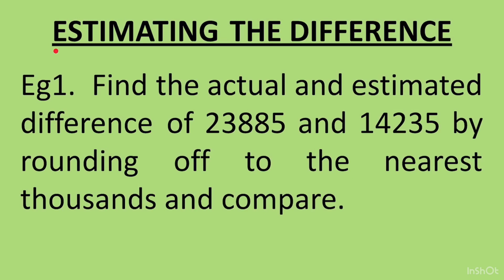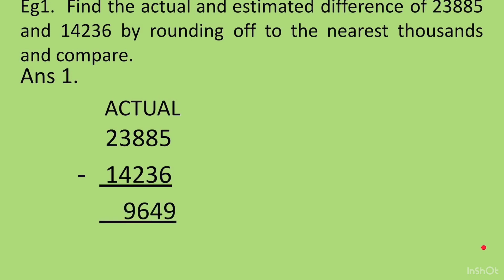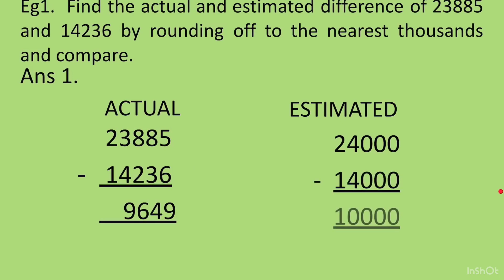Now let's do sums on estimating the difference. Example 1: find the actual and estimated difference of 23885 and 14235 by rounding off to the nearest thousands and compare. First, the actual difference is 9649. For the estimated value, 23885 rounds to 24000 (since the hundreds digit 8 is greater than 5). 14235 rounds to 14000 (since the hundreds digit 2 is less than 5). Subtracting: 24000 minus 14000 gives an estimated difference of 10000.